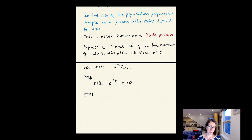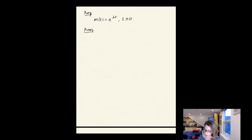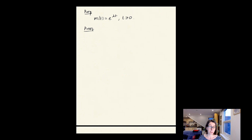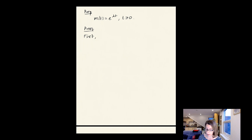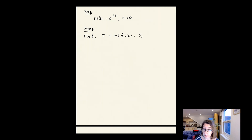Suppose we start from a single individual and let y_t be the number of individuals alive at time t > 0. We'd like to understand how the mean of this process behaves through time. Define m(t) = E[y_t]. The proposition to be proved is that m(t) = e^{lambda t} for t ≥ 0. To prove this, define T as the first birth time — the first time t ≥ 0 such that y_t = 2, starting from y_0 = 1.